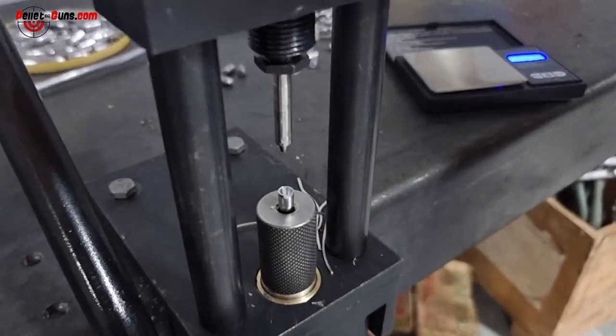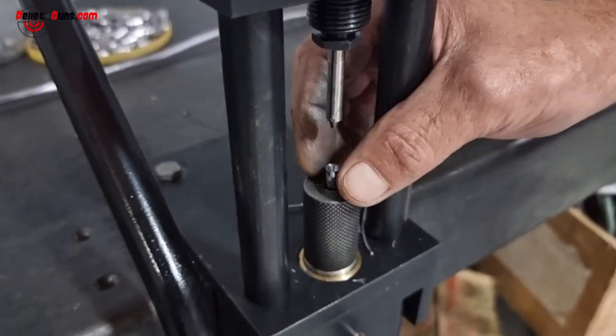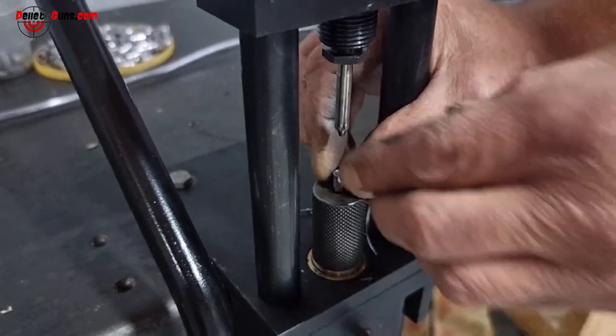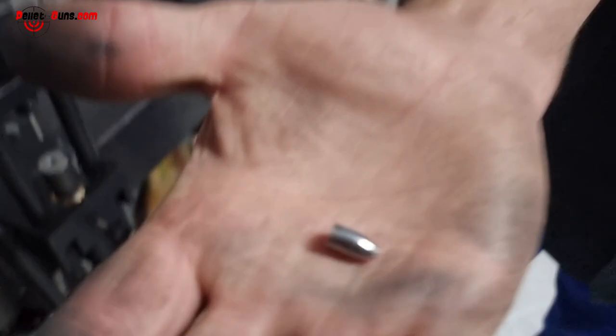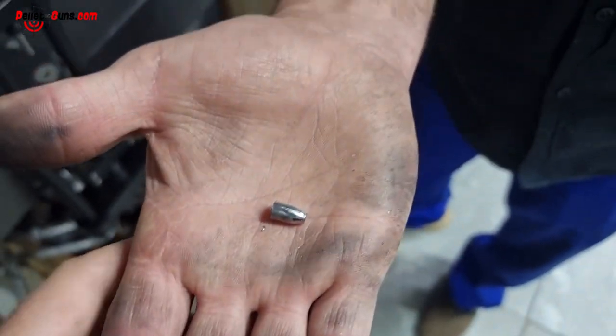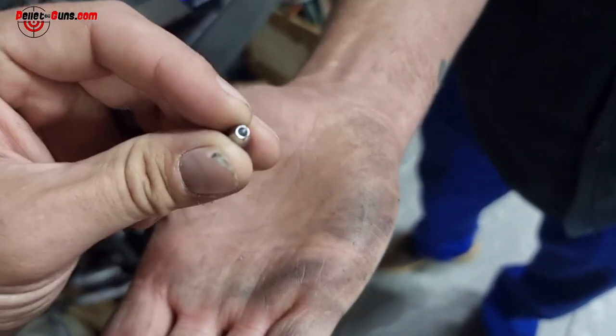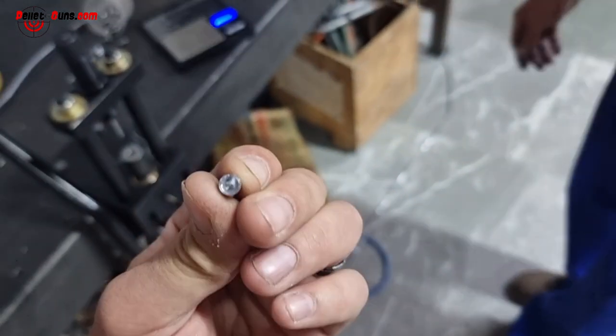And there is a swaged slug. Just remove it. We can show you how it looks. Look how beautiful that thing has been made—nicely swaged. Look at that, it's got a nice hollow point.